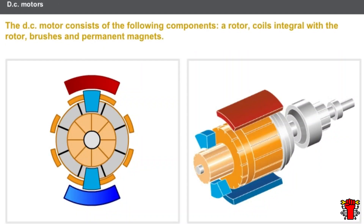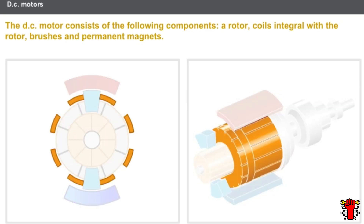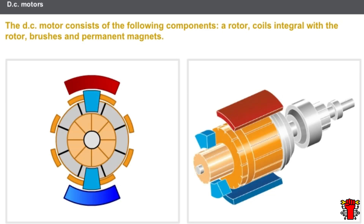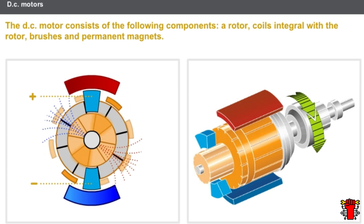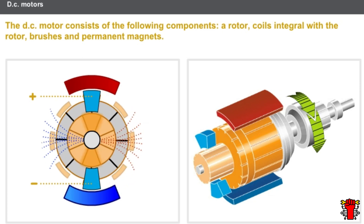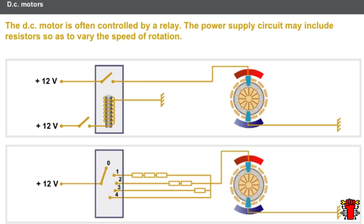Another type of actuator is the DC motor. The DC motor consists of the following components: a rotor, coils integral with the rotor, brushes, and permanent magnets. The coils are powered through the brushes and are subjected, one after the other, to the action of the magnetic field of the magnets, causing the rotor to rotate. The DC motor is often controlled by a relay. The power supply circuit may include resistors so as to vary the speed of rotation.